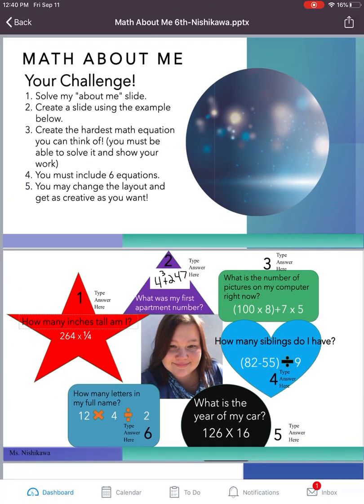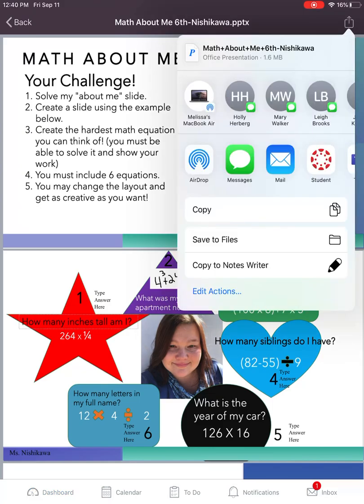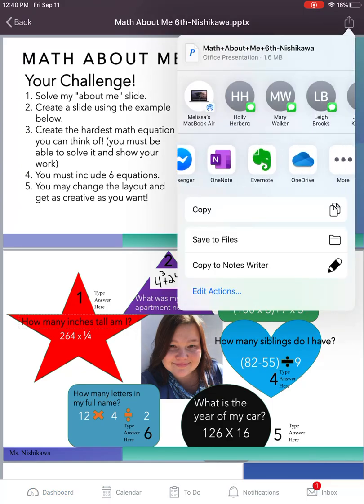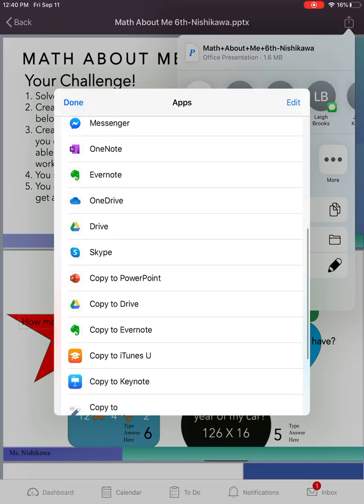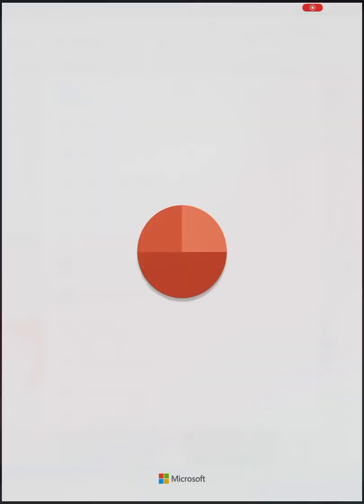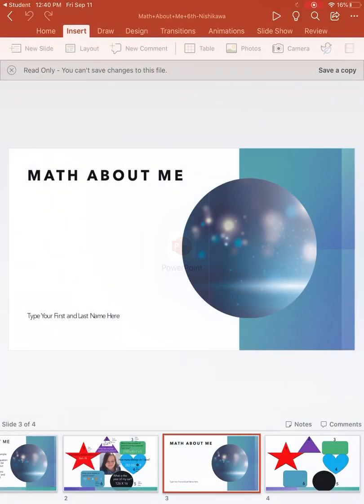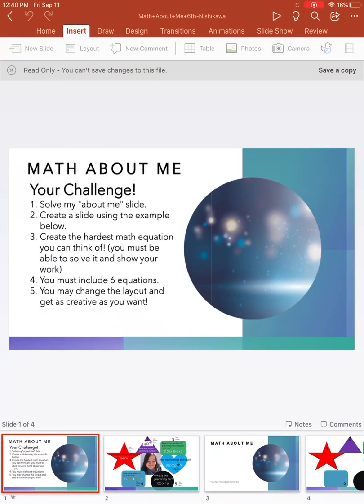You can also hit this little box up at the right hand corner underneath your battery power that has the arrow that points up. Then you'll come through here — you might have to hit 'More' if PowerPoint is not on there — and then you can copy to PowerPoint. Your PowerPoint app will open and you'll have your 'Math About Me,' or whatever the PowerPoint is.